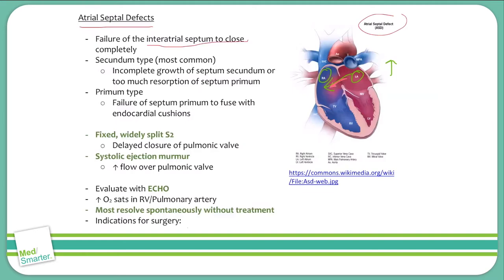From embryology, there are two types of atrial septal defects. There's the secundum type, which is the more common type, due to incomplete growth of the septum secundum or too much resorption of the septum primum. And then there's the primum type of ASD, which is due to the failure of the septum primum to fuse with the endocardial cushions as it grows downwards.